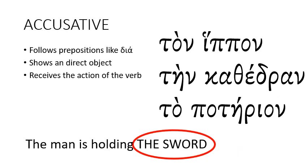The accusative case is used after some prepositions like 'via'. Most often it shows a direct object that receives the action of the verb. So in 'the man is holding the sword', the sword is the direct object — what is the man holding? The man is holding the sword. The sign for the accusative case is an '-n'. So you have 'ton ipon', 'tein cathedran', or 'to poterion'.